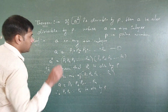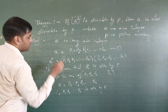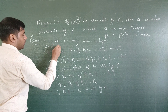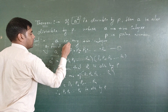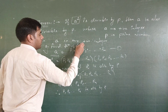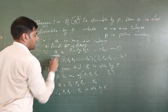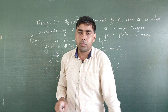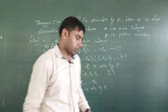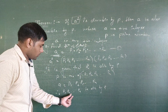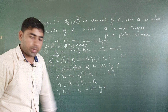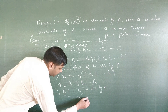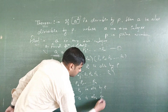By the Fundamental Theorem of Arithmetic, we can write a equals p1 × p2 × ... × pn. From here, p1, p2, p3, ..., pn is divisible by p. This product is equal to a. So, a is divisible by p.